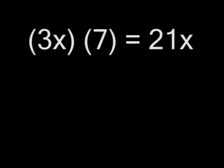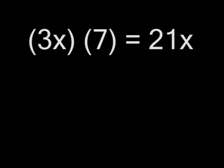Now, for the outer group, 3x and 7. Since 7 doesn't have a variable, there will be no exponents in this expression. It is simply 3 times 7, which is 21, and add x, so it's 21x.